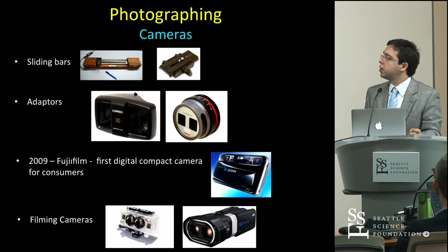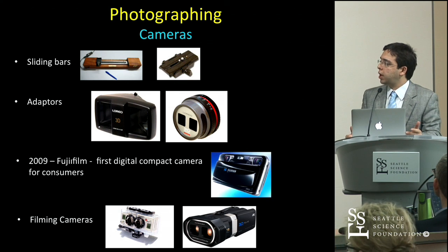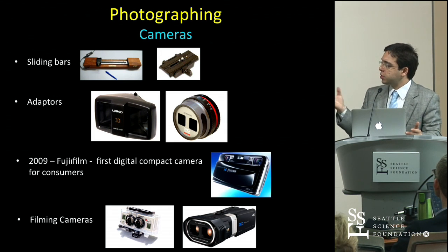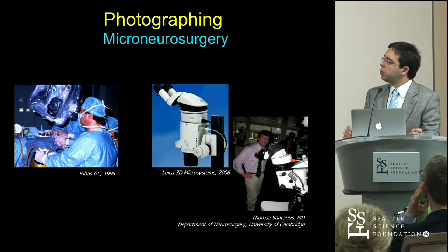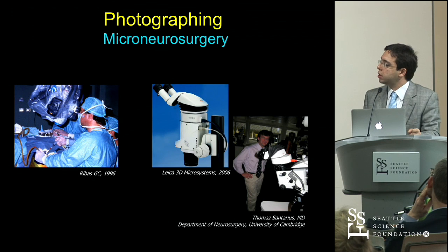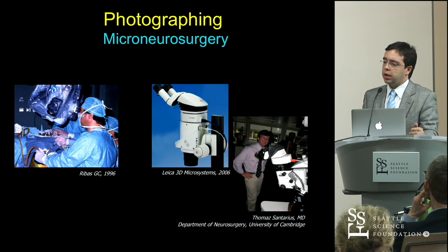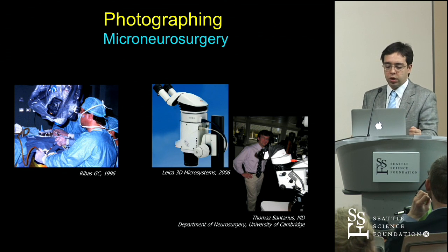A number of ways have been developed to capture the two camera images. The most traditional is the sliding bar, where you take one picture, slide the camera, and take the second. But there are easier ways: adapters can be placed in front of a camera to take both images simultaneously, and there are cameras that automatically capture two images for photography or filming. Solutions have also been made for operating rooms, such as 3D cameras inside the surgical microscope. The Leica 3D camera was the first placed between the lenses of a surgical microscope to get both images. Nowadays, complete solutions like TrueVision sell a full surgical microscope system so you can film all your surgery.